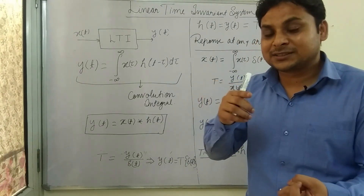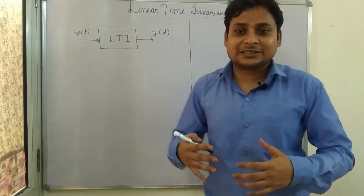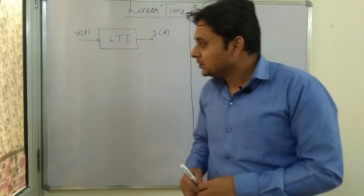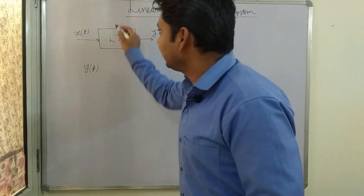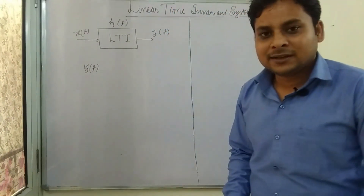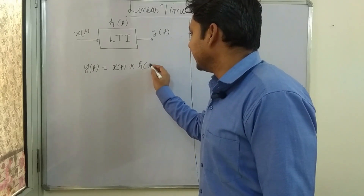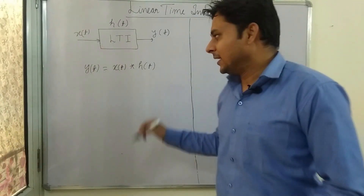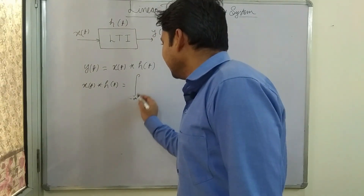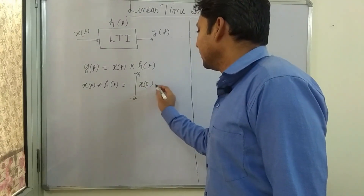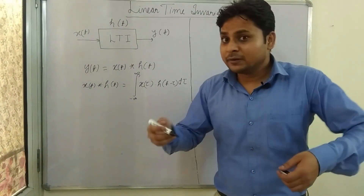The convolution integral can be written as y(t) = x(t) * h(t) — convolution of x(t) with h(t). This symbol represents the convolution operator. Now you can see what the convolution integral is and why it is utilized. It is utilized to find out the output of any LTI system at any arbitrary input using the impulse response. If the impulse response of the system is h(t), then the output equals x(t) convolved with h(t).